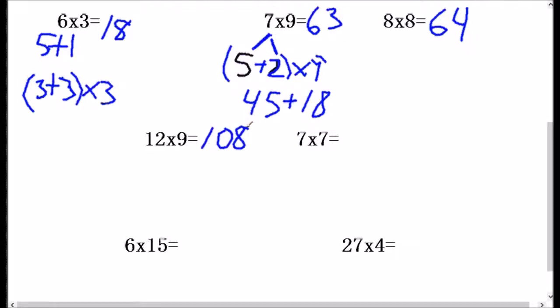7 times 7. Well, 7 times 5 is 35. And 7 times 2 is 14. So we're doing 35 plus 14, which is 49.